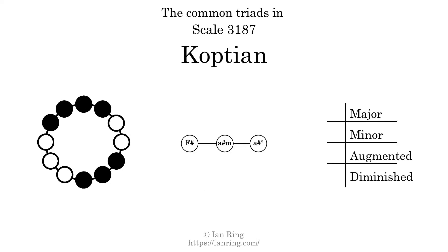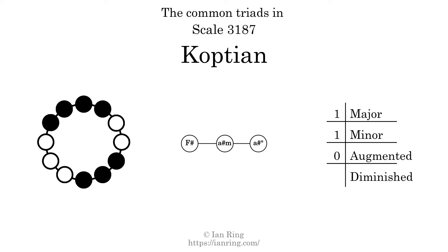Here are the common triads present in this scale. The diagram in the center is a graph of parsimonious voice leading between triads. There is one major triad, one minor triad, no augmented triads, and one diminished triad. Here is a Hamiltonian path of parsimonious voice leading that uses all the triads.